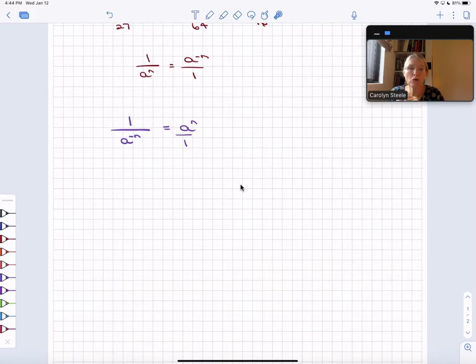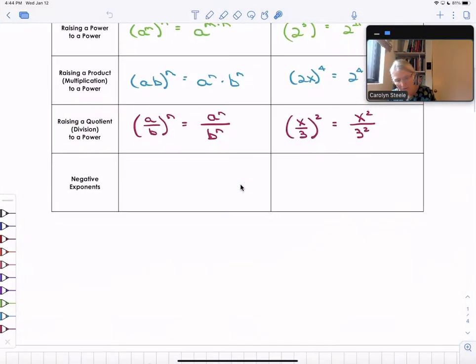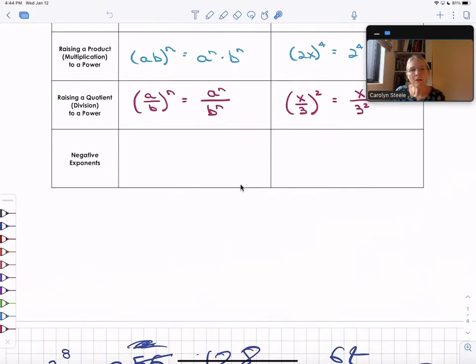All right, let's record your findings now in your exponent summary table. So if you don't have it, pause me, grab your math journal, and open up to that page. All right, let me go over to mine. Here's mine, and we're going to add something here to the last row that talks about negative exponents. And we're going to add that we know that 1/a^n is just the same as a^(-n).